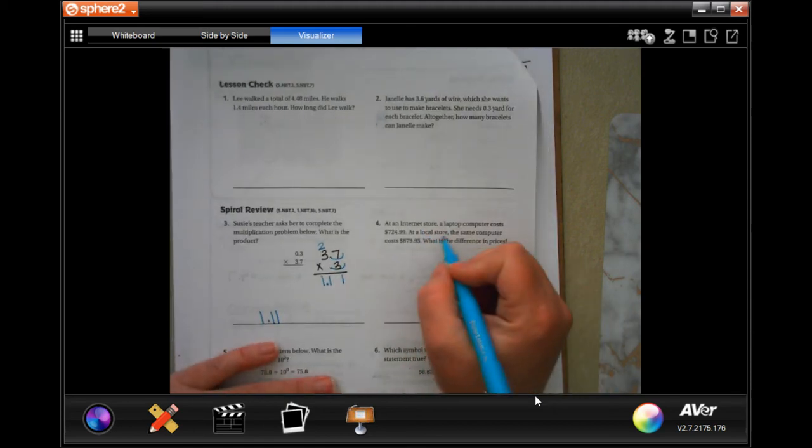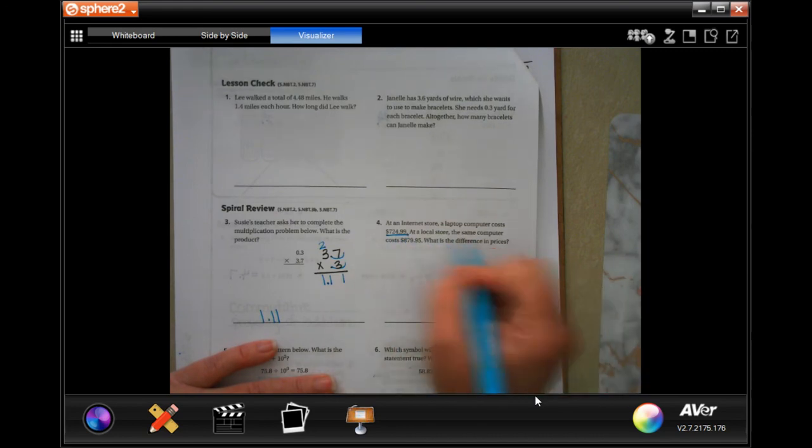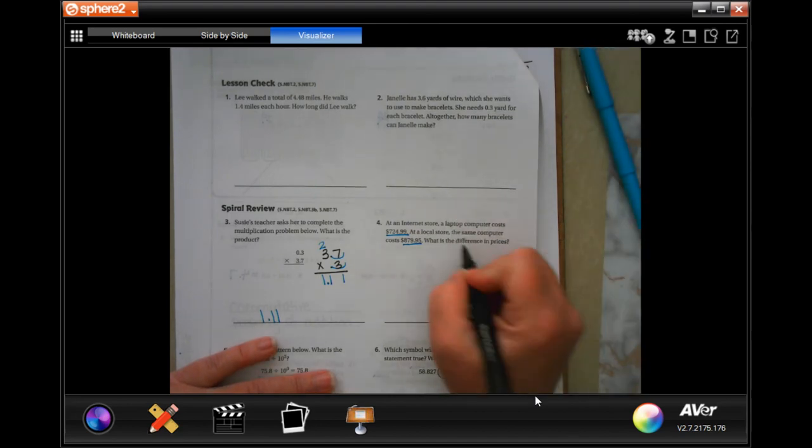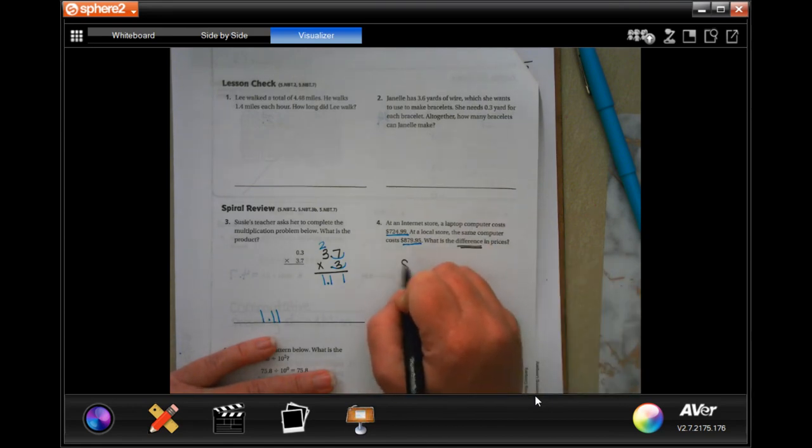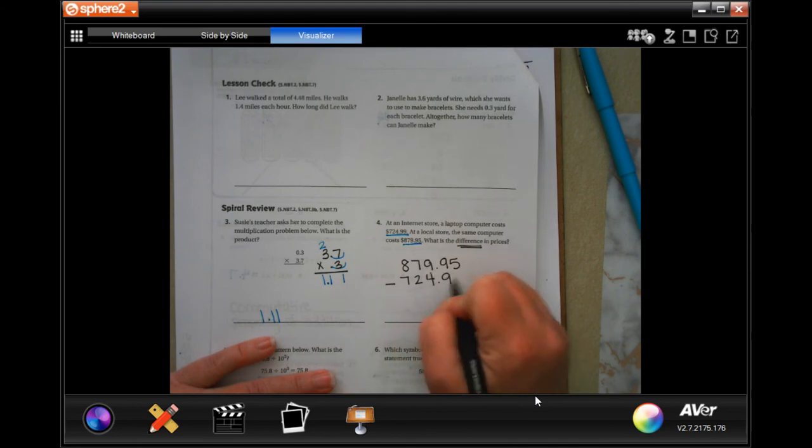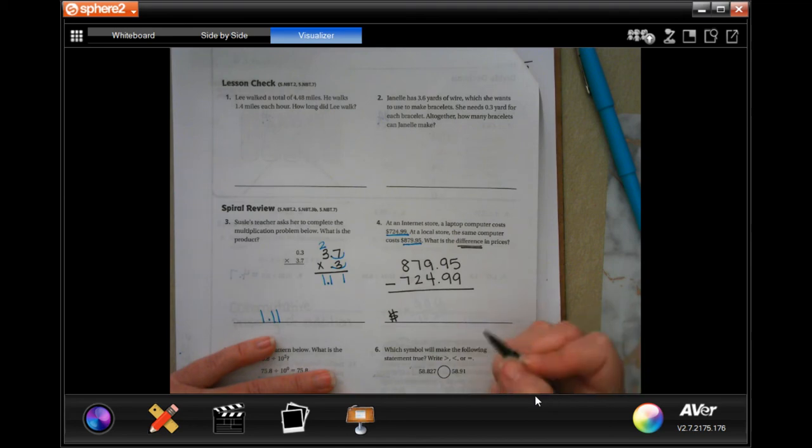An internet store, a laptop computer costs $724.99. At a local store, the same computer costs $879.95. What is the difference in the prices? Difference means subtract. You have to find the difference you are subtracting. So we're going to put the bigger number up top. We're going to subtract the smaller number. And the answer is going to be our answer to our problem.